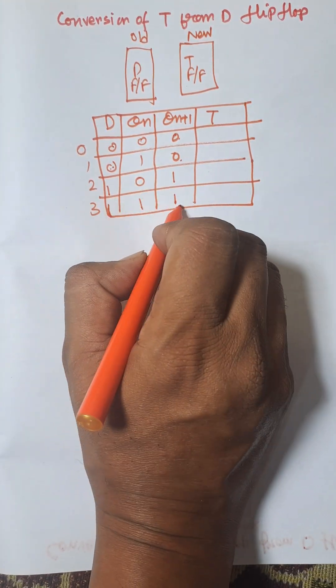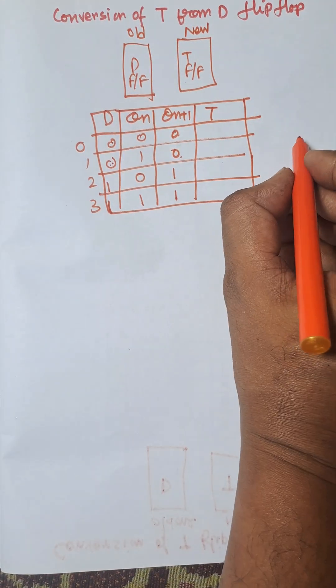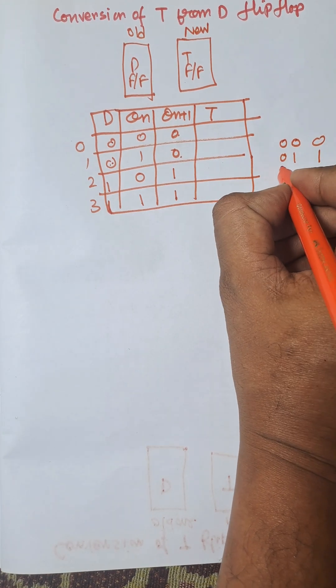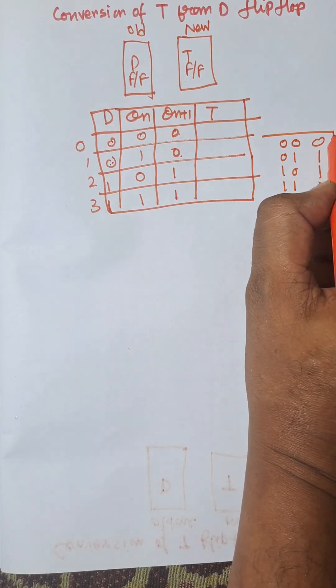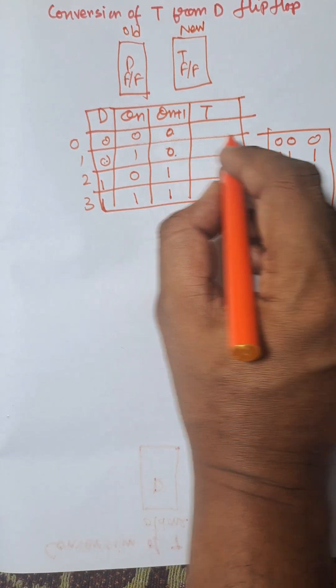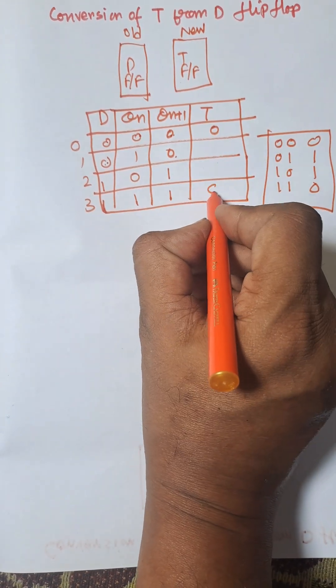Now we need to construct the excitation table for T flip-flop. For 00 the output is 0, for 01 it is 1, for 10 it is 1, for 11 it is 0. Remember, for same input it is 0, for different input it is 1.